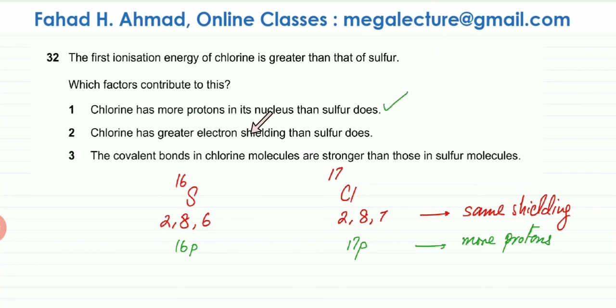The other one, chlorine has greater electron shielding. The shielding is pretty much the same. They have exactly the same number of shells. The nucleus and the outer electrons, it's the same number of electrons that are coming in between. The nucleus and the outer electrons, it's the same number of shells, same number of electrons that are coming in between them. So the shielding remains constant. It's not a factor in this case.